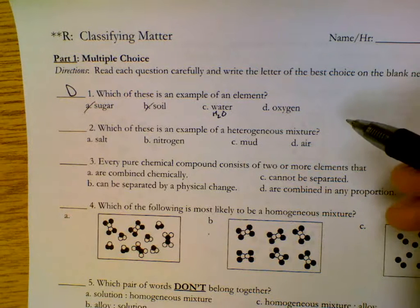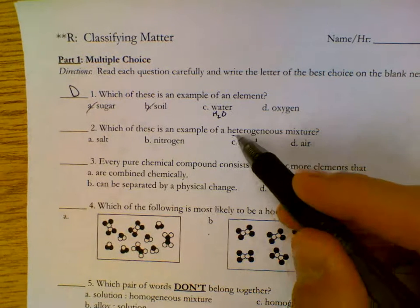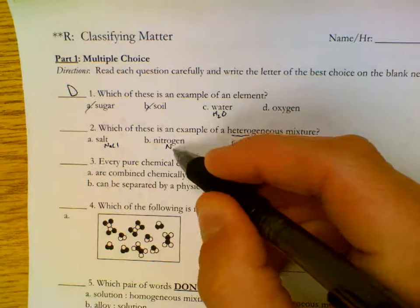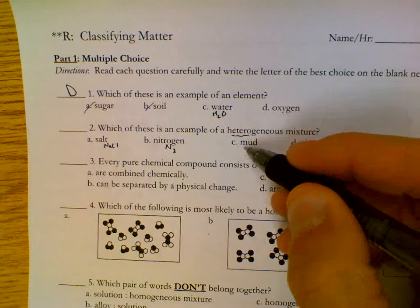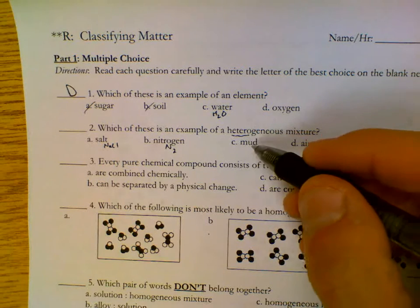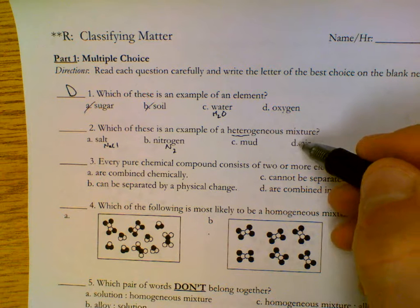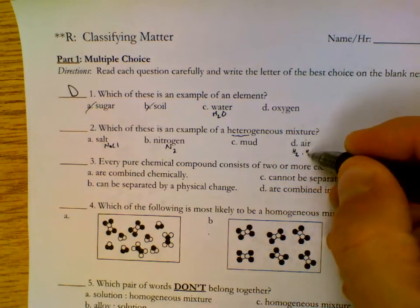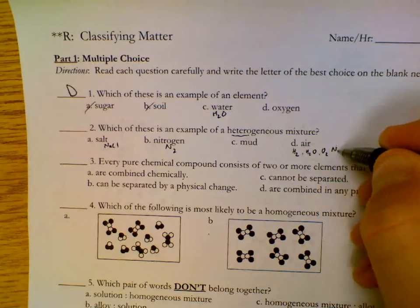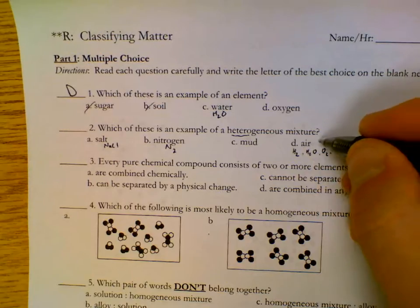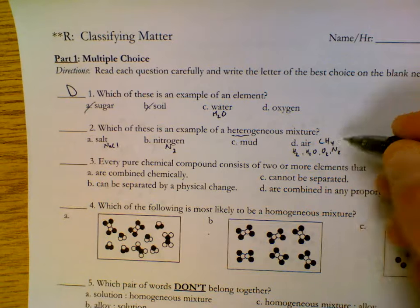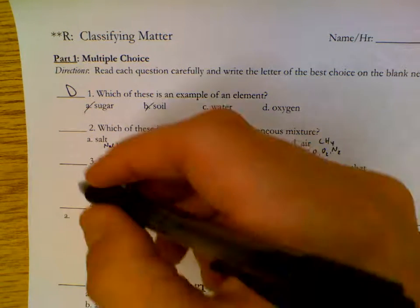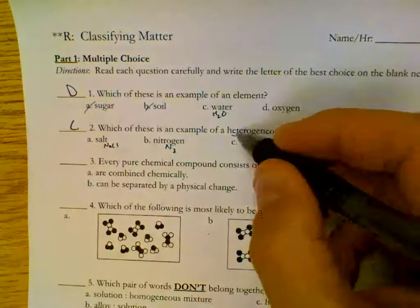Which of these is an example of a heterogeneous mixture? You can see clear differences. Salt is NaCl, so that's a compound. Nitrogen is N2. Mud would be all kinds of different materials - water, soil, gravel. Air is a mix of hydrogen, water vapor, oxygen, nitrogen, methane. So a lot of different compounds physically combined. It looks the same throughout. So this is a mixture. Mud's a mixture. From mud, you can see the differences. Prefix hetero.